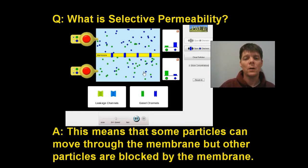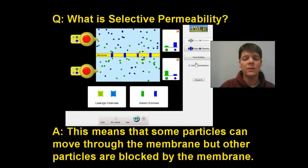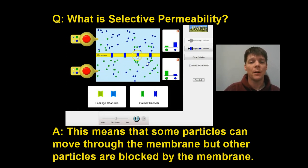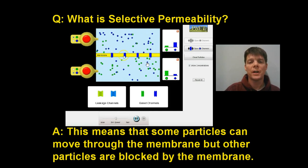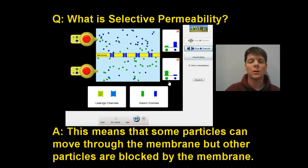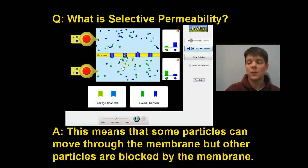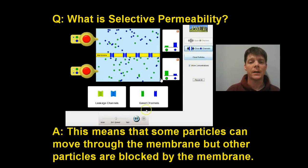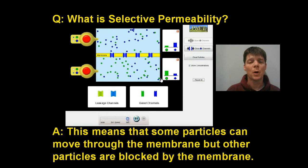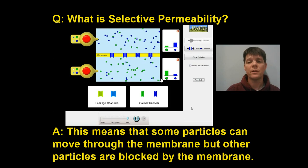Let's take a look at what this might look like. We've set up a situation where we have blue and green particles both on the inside and the outside of this cell. I've added channel proteins for the blue particles, but no channel proteins for the green particles. So we can see that the blue particles are able to move from one side to the other side, but the green particles are blocked. This membrane is selectively permeable — it allows the blue particles to pass through it, but it does not allow the green particles to pass through it.